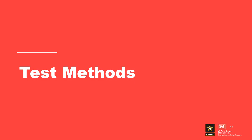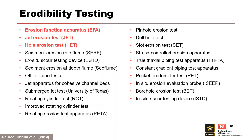Erosion properties of soils can be determined by numerous tests. The listing of tests is from the Table of Contents of Briot et al. 2019. The erosion function apparatus, jet erosion test, and hole erosion test highlighted in red are three of the more commonly conducted tests.